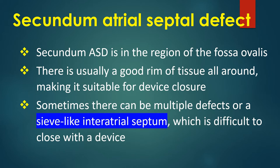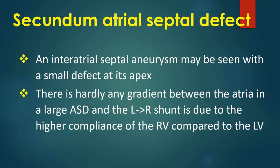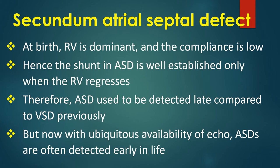Secundum ASD is in the region of the fossa ovalis. There is usually a good rim of tissue all around, making it suitable for device closure. Sometimes there can be multiple defects or a sieve-like intra-atrial septum, which is difficult to close with a device. An intra-atrial septal aneurysm may be seen with a small defect at its apex. There is hardly any gradient between the atria in a large ASD; the left to right shunt is due to the higher compliance of the right ventricle compared to the left. At birth, the right ventricle is dominant and compliance is low, so the shunt in ASD is well established only when the RV regresses. Therefore ASD used to be detected late compared to VSD previously.